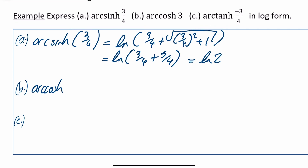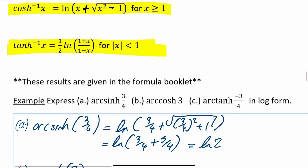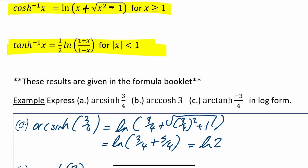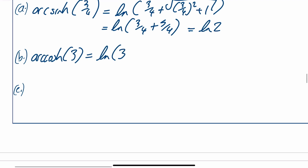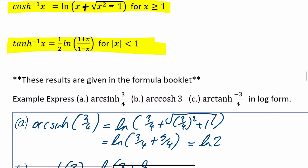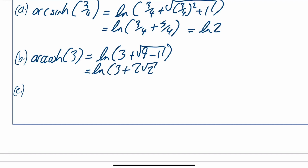Arc hyperbolic cosine of 3: using the formula ln of x plus the square root of x squared minus 1, that's ln of 3 plus the square root of 9 minus 1. Working that out, the best you can get is ln of 3 plus 2 root 2, since root 8 simplifies to 2 root 2.